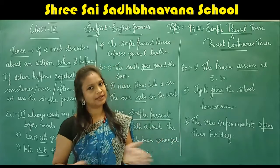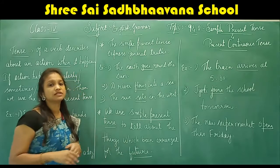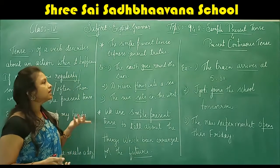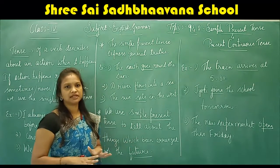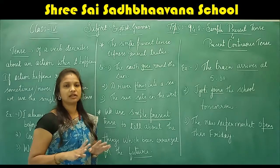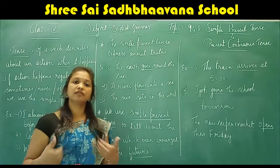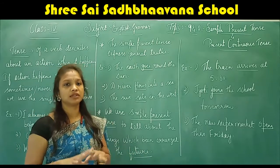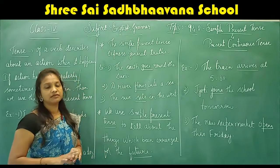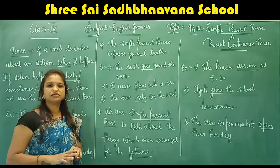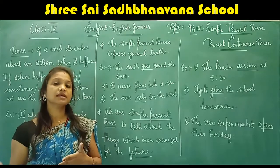Simple present tense is used for actions that take place like a habit, or for general truths. For example: 'The earth goes round the sun.' The verb 'goes' is in simple present tense and talks about a general truth — the earth always revolves around the sun. Next: 'A river flows into a sea.' This is also a common truth that everyone knows.